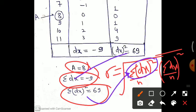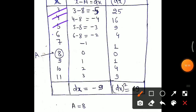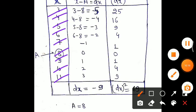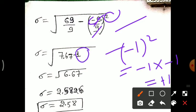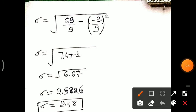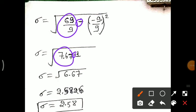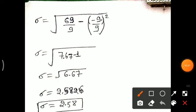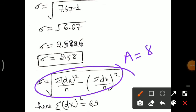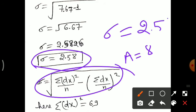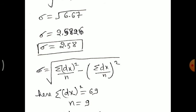Substituting the values: summation dx² is 69, summation dx is minus 9, and n is 9 — because there are 1 through 9 values. In the formula, minus 9 upon 9 gives minus 1, and minus 1 squared equals plus 1. So we get 69 upon 9 minus 1, which equals 7.67 minus 1 equals 6.67, and the square root of 6.67 equals 2.58. Using assumed mean 8, we still get sigma equals 2.58 — the same answer as the direct method.